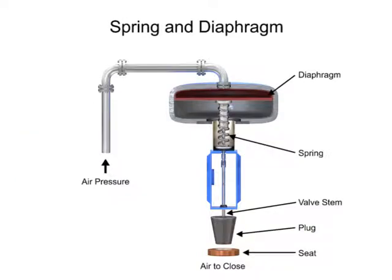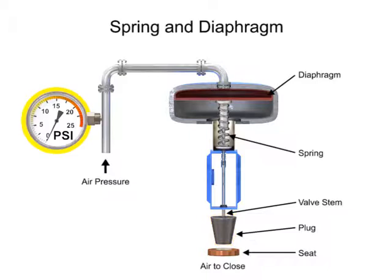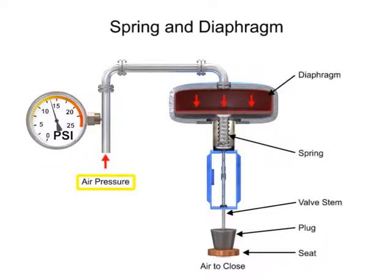The spring and diaphragm actuator uses a spring and a diaphragm to move the valve stem and plug. A 15 PSI pneumatic signal enters the housing at the top of the actuator. As pressure is exerted on the diaphragm, a downward force is applied against the spring which moves the restrictor. The diaphragm moves until it creates an equal but opposing force against the spring, at which time the motion stops as the plug meets the valve seat.